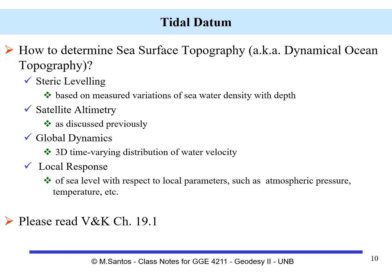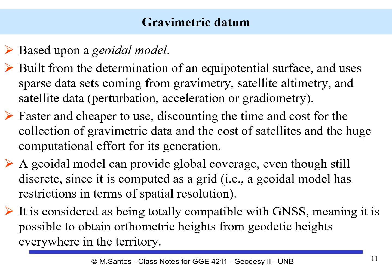The method known as local response is essentially the definition of sea level with respect to local parameters such as atmospheric pressure and temperature. These are discussed in the textbook by Vanicek and Krakiwsky in chapter 19.1.